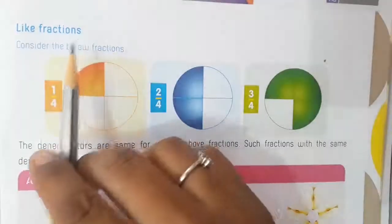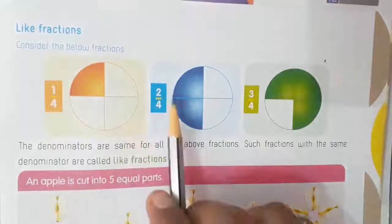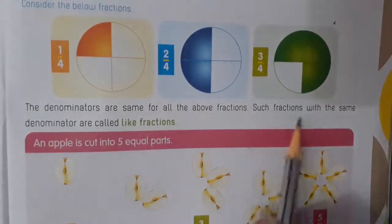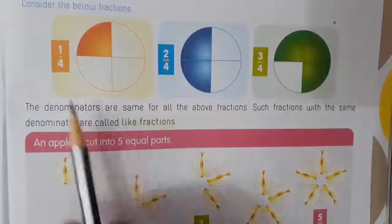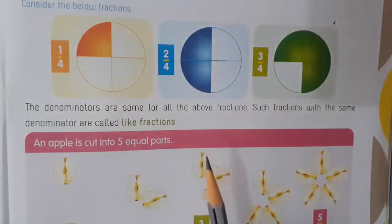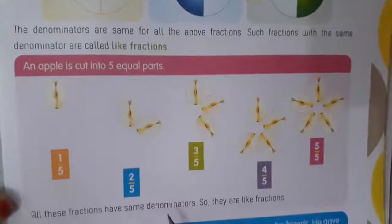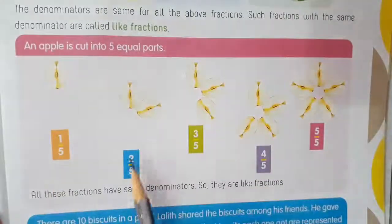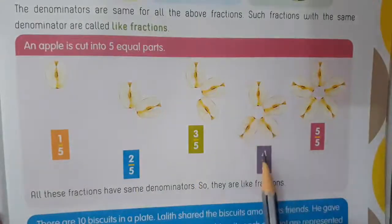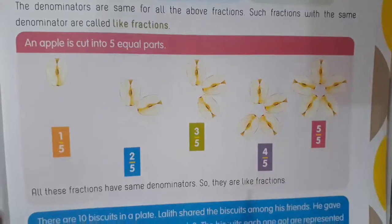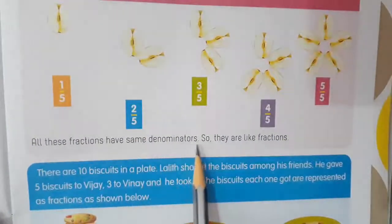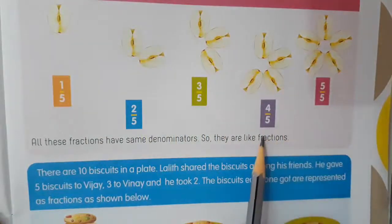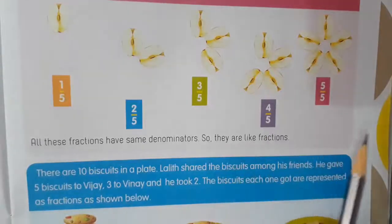This is about the comparison of fractions. Now the next concept: like fractions. Consider the fractions 1 by 4, 2 by 4, 3 by 4. The denominators are the same for all these fractions. Such fractions with the same denominator are called like fractions. See here: an apple is cut into 5 equal parts — 1 by 5, 2 by 5, 3 by 5, 4 by 5, 5 by 5. All these fractions have the same denominator, so they are like fractions.